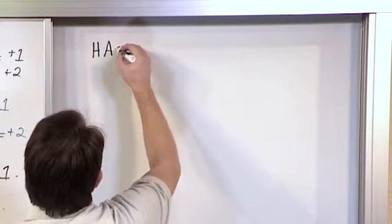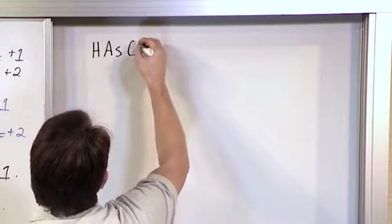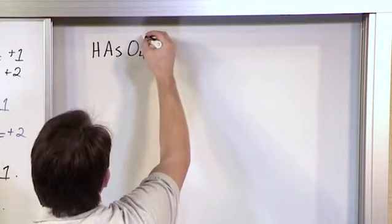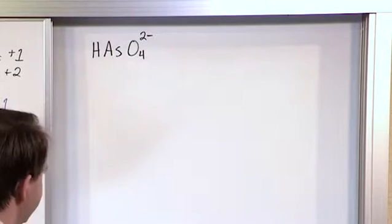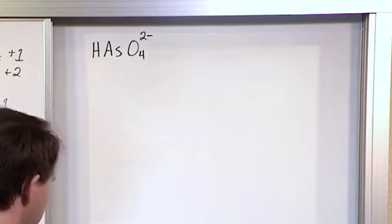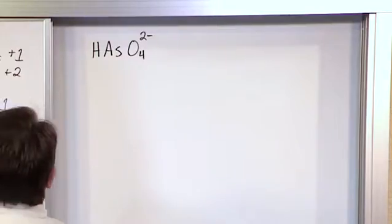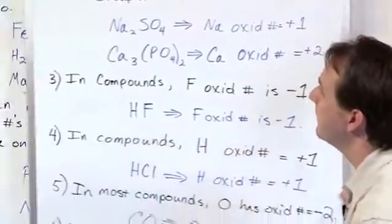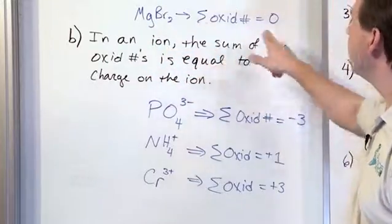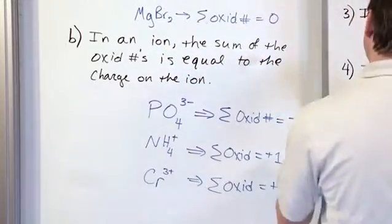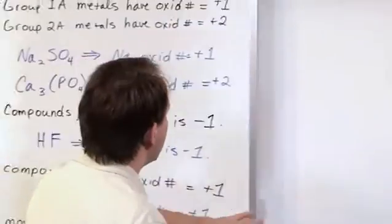So here we have hydrogen, arsenic, oxygen and this is an ion where the charge on this whole guy is negative two. So again we go off and we look at rule number one which we've done many times and basically it says if it's an ion then the sum of the oxidation numbers is equal to the charge on that ion.